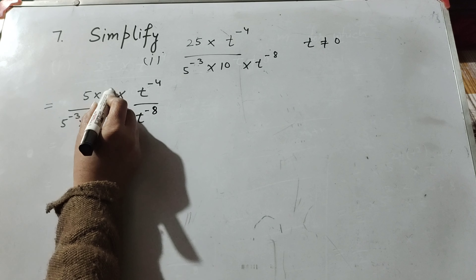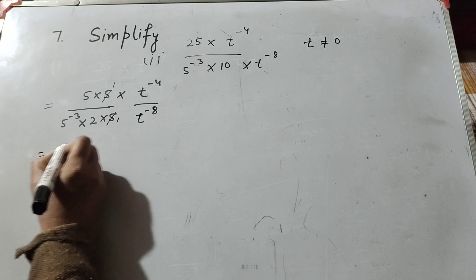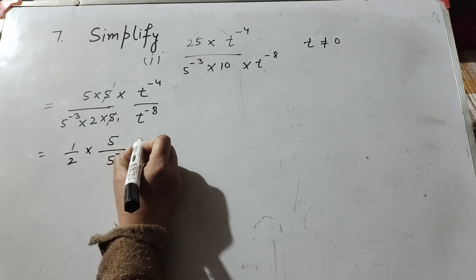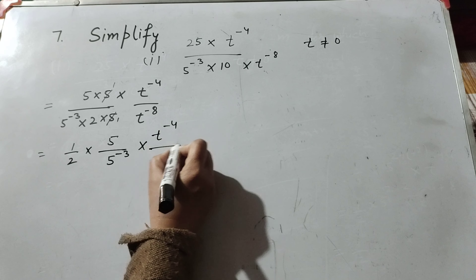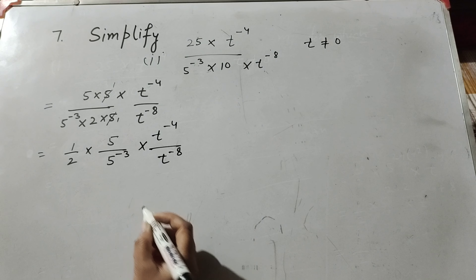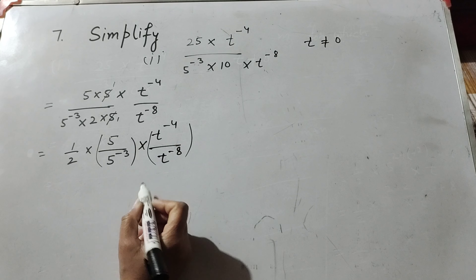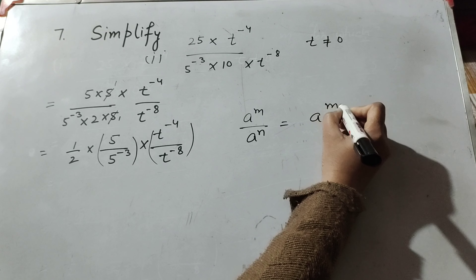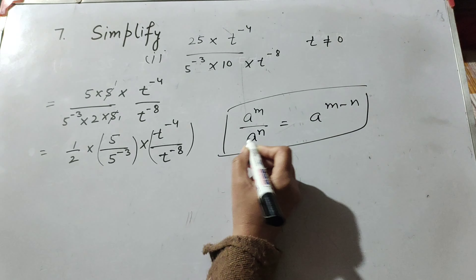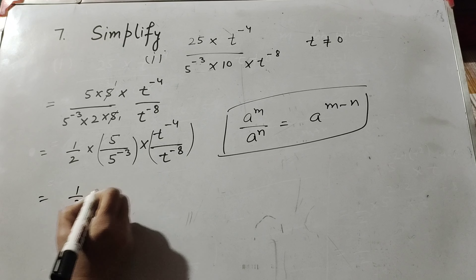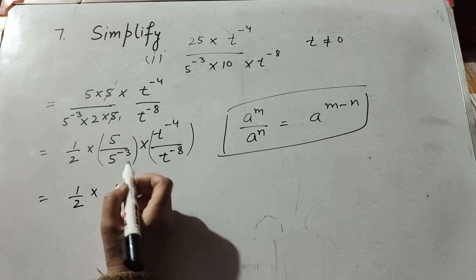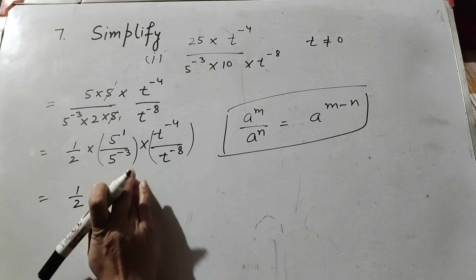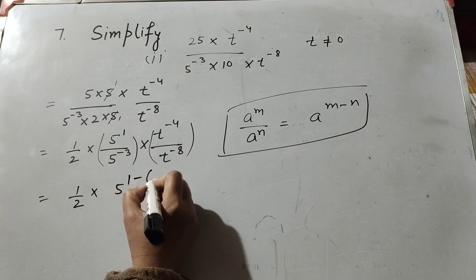5 in the denominator and 5 in the numerator are both cancelled. So we get 1 over 2 into 5 over 5 raised to power minus 3, into t raised to power minus 4 over t raised to power minus 8. Now in these two terms, 5 over 5 raised to power minus 3 and t raised to power minus 4 over t raised to power minus 8, we use the law of exponent: a raised to power m over a raised to power n equals a raised to power m minus n. By using this law, it is equal to 1 over 2 into 5 raised to power 1 over 5 raised to power minus 3, which is 1 minus minus 3.